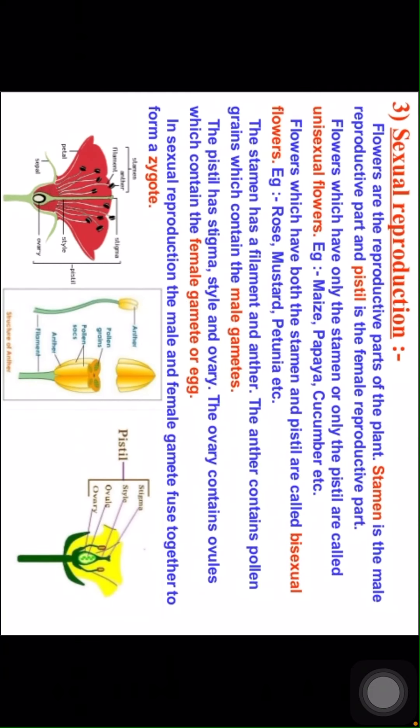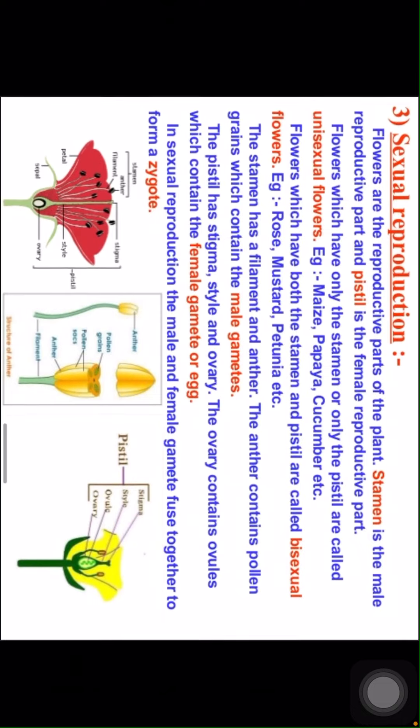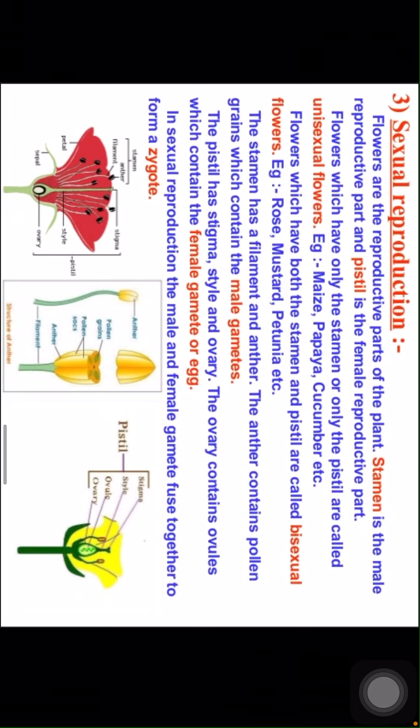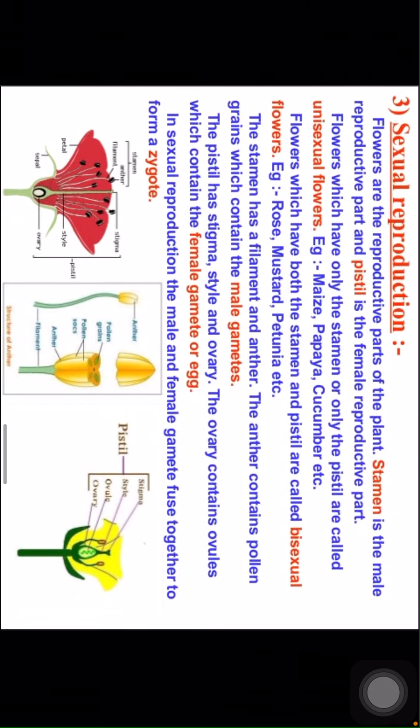Now, sexual reproduction. Flowers are the reproductive parts of the plant. The stamen is the male reproductive part and the pistil is the female reproductive part. Flowers which have only the stamen or only the pistil are called unisexual flowers. Examples: maize, papaya, cucumber.